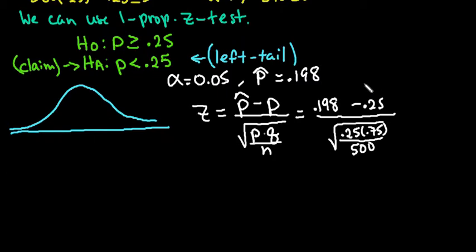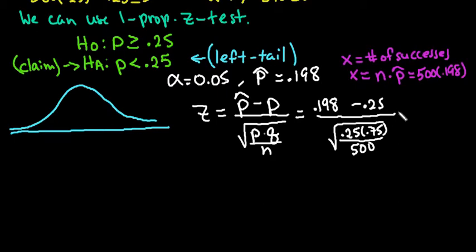And when we go into our calculator to run the test, we do have to know what X is. X is our number of successes. And in order to find it when you're not given it, you would take your N times your P hat. So I would just put in 500 times 0.198, and this value does have to be a whole number. If it is not a whole number, then you must round to the nearest whole number. So let me get my calculator in order to find the answer to this as well as the P value as well as being able to shade it in our drawing.